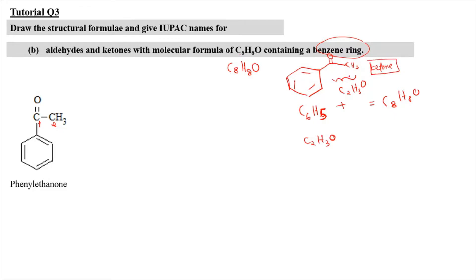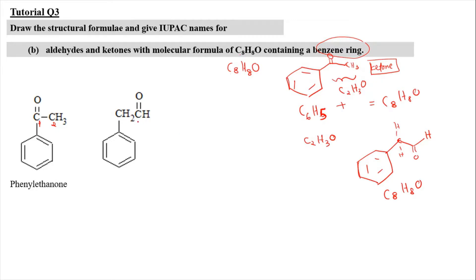We can now change it into an aldehyde. Using the same benzene ring (C6H5), we need to reach C8 total, so we add 2 carbons (1 and 2), and at the end of the chain we make it an aldehyde (C-H). The total: C6H5 + C2H3O = C8H8O — consistent. This second structure has 1 and 2 carbons forming ethanal, making it 2-phenylethanal. The first structure is 1-phenylethanone.